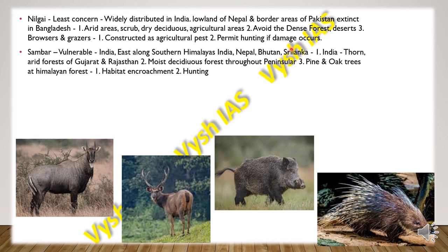Then we have the Sambar, which is vulnerable. It is found in India along the eastern regions of the southern Himalayas, Nepal, Bhutan and Sri Lanka. In India it is found in thorn and arid forests of Gujarat and Rajasthan, moist deciduous forests throughout the peninsula, and forests with pine and oak trees in the Himalayan region. The main threats are habitat encroachment and hunting.